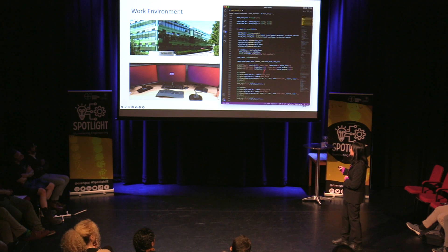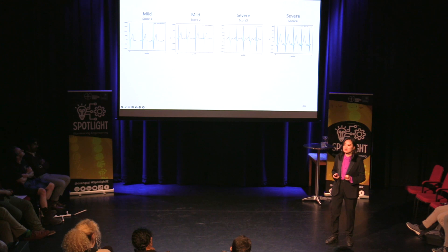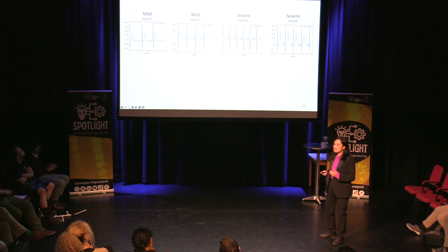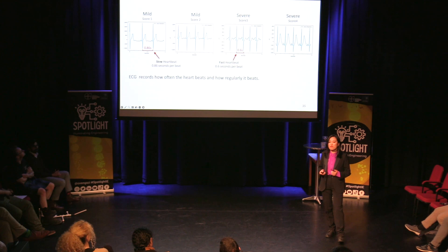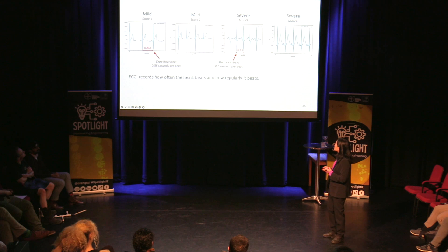Here is one of the coding examples of my work. There are four different scores for tetanus severity. Scores 1 and 2 are mild tetanus; scores 3 and 4 are severe tetanus. There are four different ECG examples presenting the different severity levels. The ECG records how often the heart beats and how regularly it beats. Mild tetanus shows a slow heartbeat, while severe tetanus has a fast heartbeat.